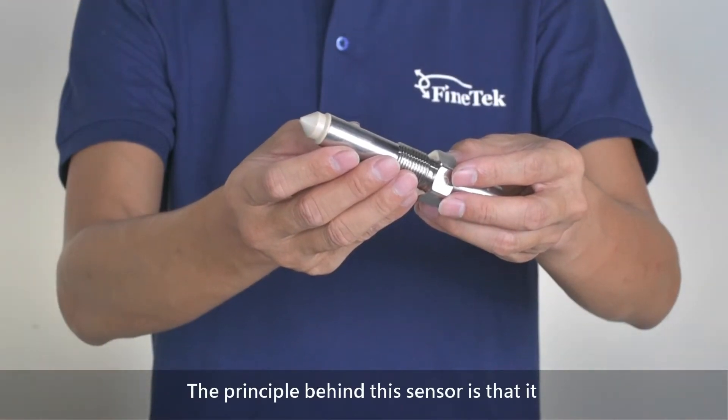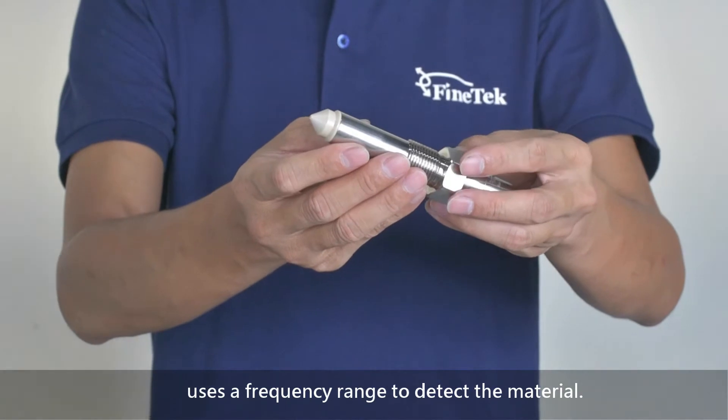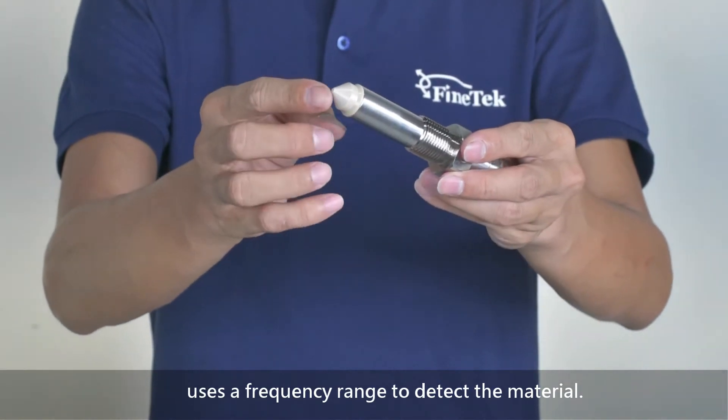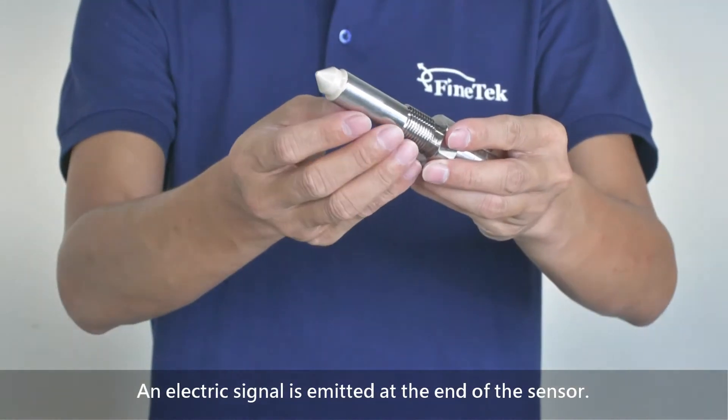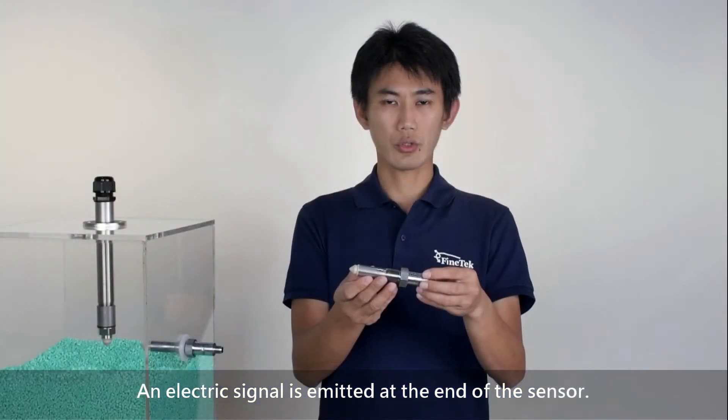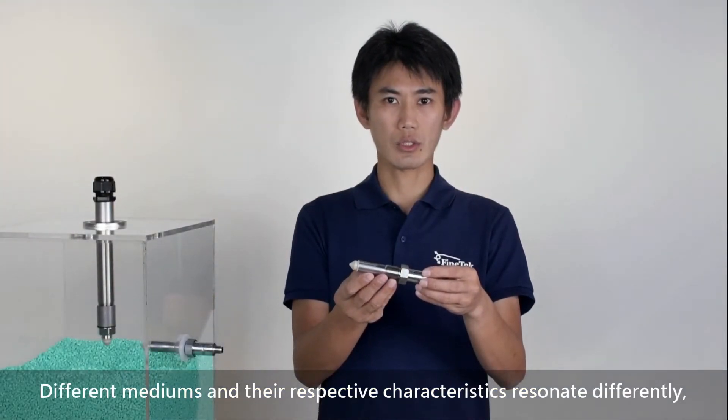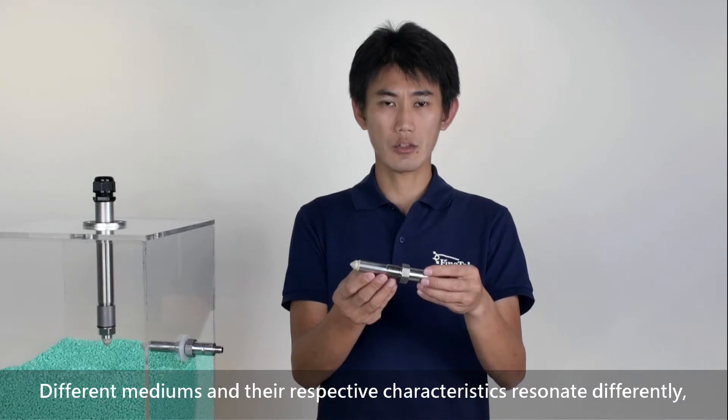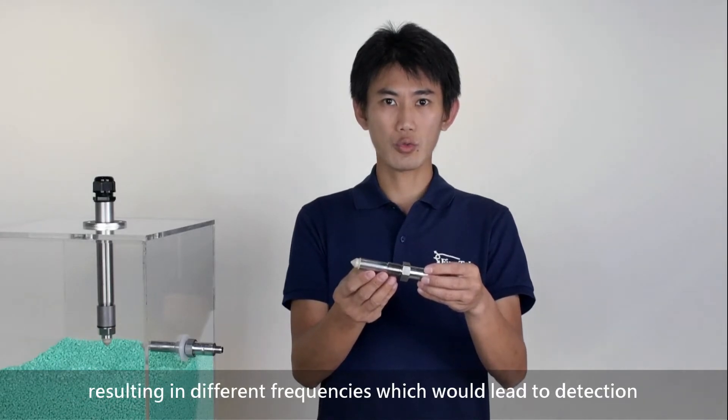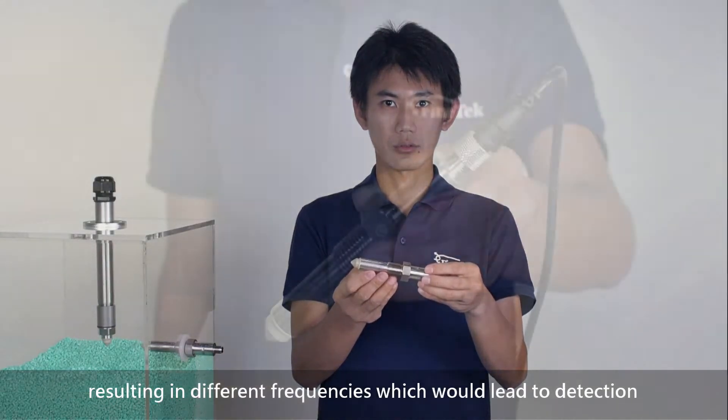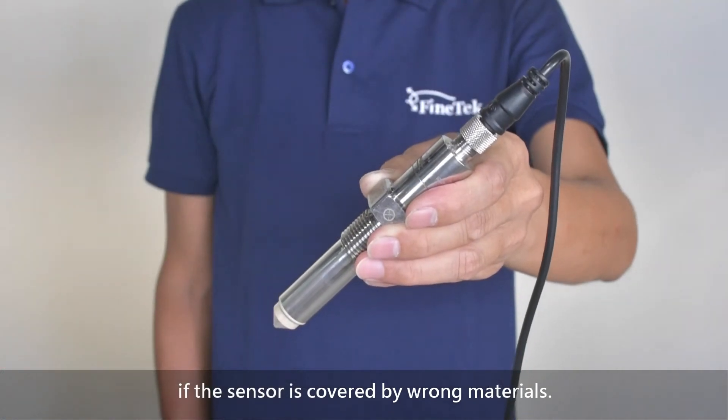The principle behind this sensor is that it uses a frequency range to detect the material. An electric signal is emitted at the end of the sensor. Different mediums and their respective characteristics resonate differently, resulting in different frequencies which lead to detection if the sensor is covered by material.